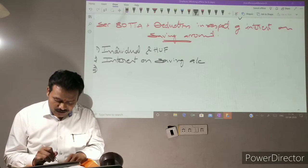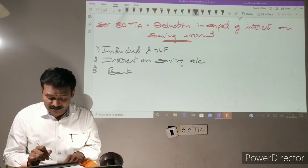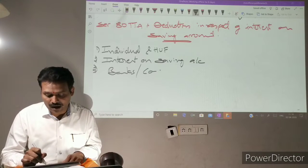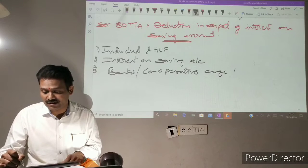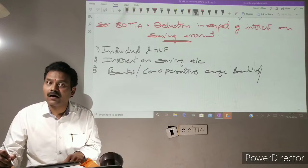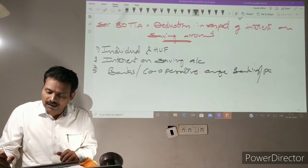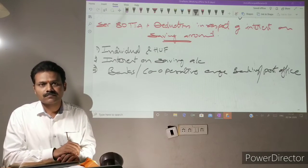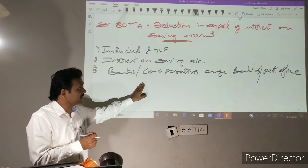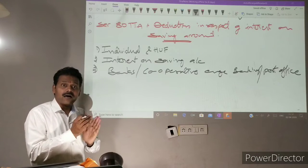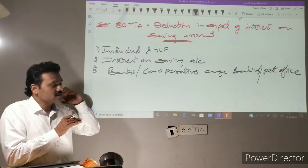Point number three: the saving account must be with Banks, or with a Co-operative Society engaged in banking transactions, or a Land Development Bank (Co-operative), or a Post Office. So saving account held by Individual or HUF with banks, co-operative society engaged in banking transactions, co-operative land development bank, or Post Office saving account.